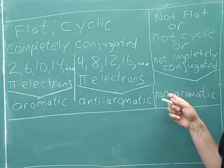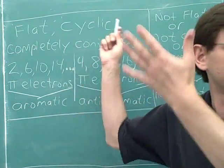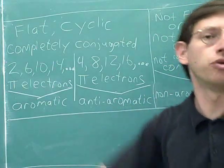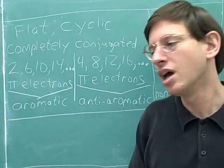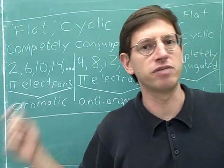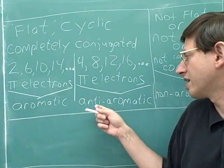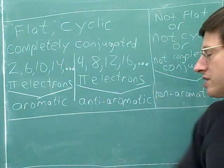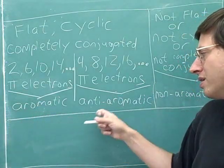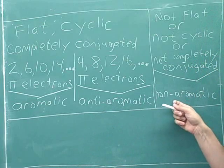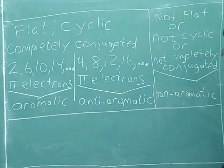Non-aromatic just means normal — neither particularly stable nor unstable. A non-aromatic molecule is just a normal molecule like you would have studied all through the first semester of O-chem. You didn't use the terms aromatic and anti-aromatic because you were just studying normal non-aromatic compounds. So aromatic means very stable, anti-aromatic means very unstable, and non-aromatic means normal.